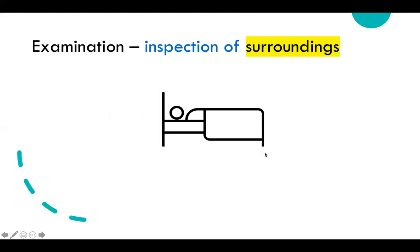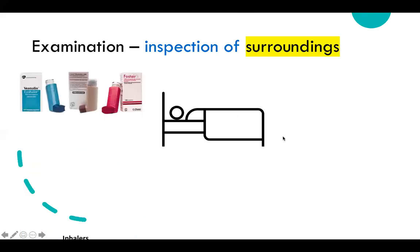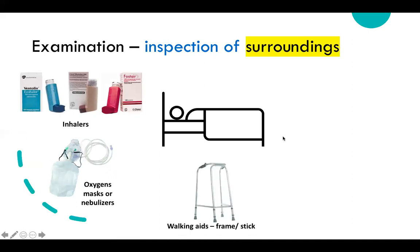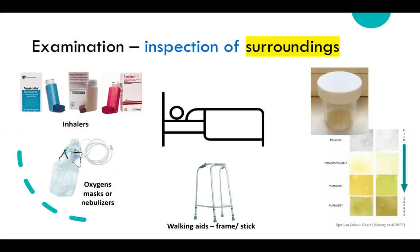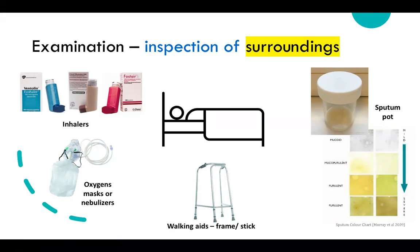In the surroundings, look for inhalers, oxygen masks or nebulizers, and walking aids — these relate to the patient's frailty and general well-being. Look for sputum pots, and if present, offer to examine the contents. Comment on whether it looks purulent or yellow, which could indicate infection, and state you would send it for further analysis. Scars are noted during patient inspection.